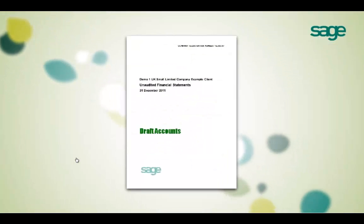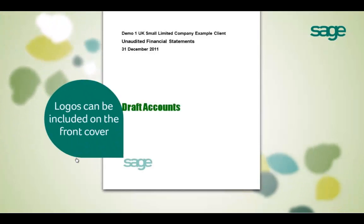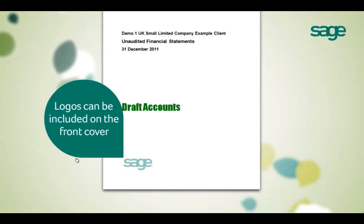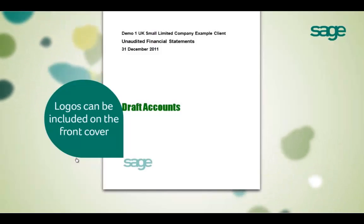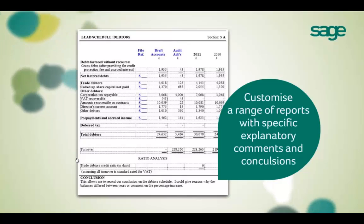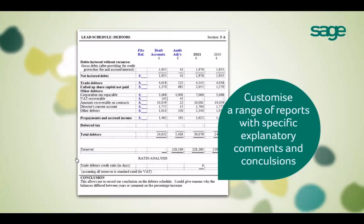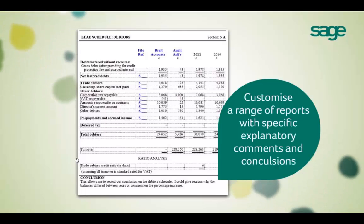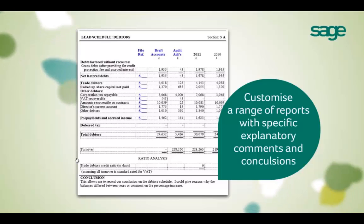As an example, we've put the Sage logo on the front page of the accounts. All you need is an image file for your logo, such as a JPEG, and you can do the same. This may save you the cost of printing the first page on letter-headed stationery. Finally, your additional reports such as lead schedules can also be tailored with specific explanatory text and conclusions.